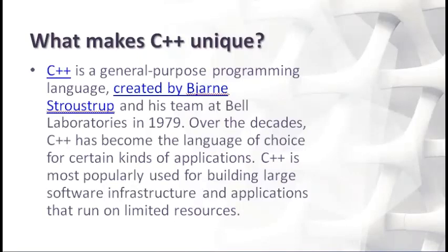C++ is most popularly used for building large software infrastructure and applications that run on limited resources. Because C++ can directly manipulate the hardware or machine that it runs on, programmers can fine-tune their code to run efficiently in any environment, even when there's limited hardware space or energy available. This translates to applications that run quickly and reliably on a variety of devices, making C++ ideal for forming the base layer of many important applications.